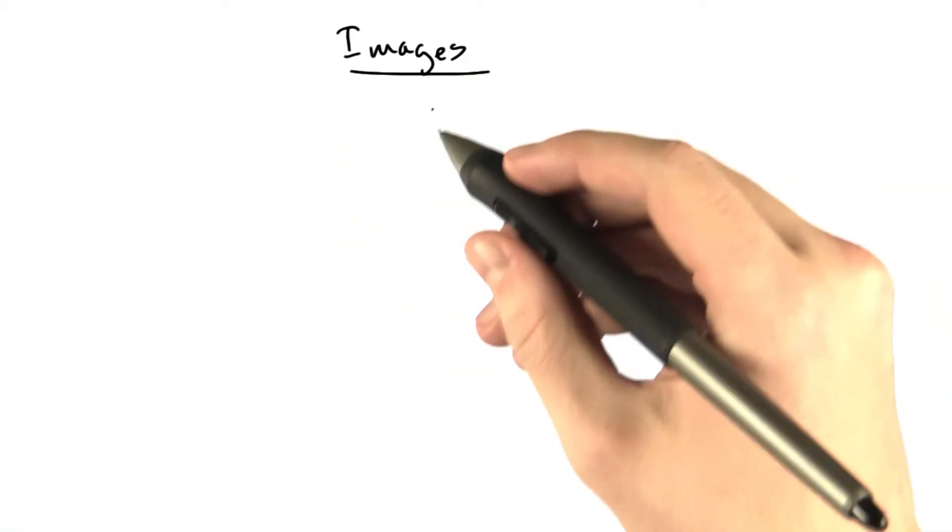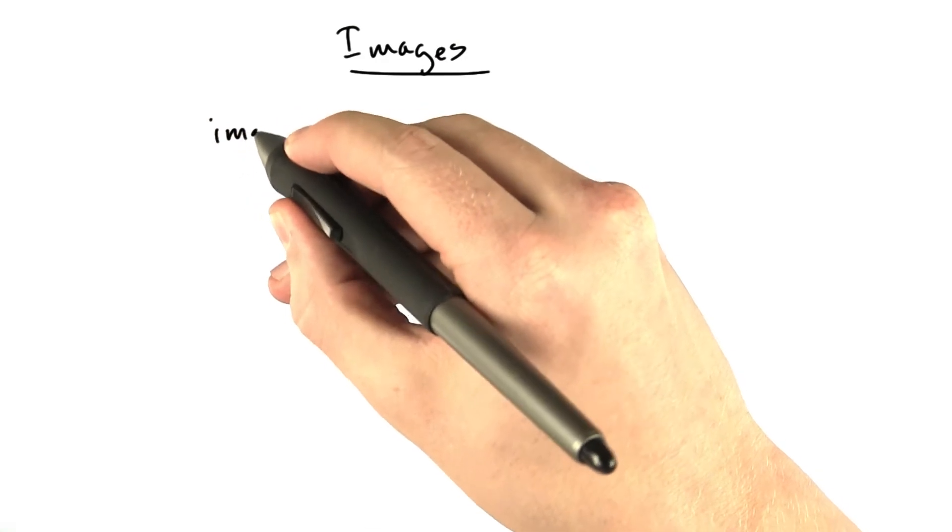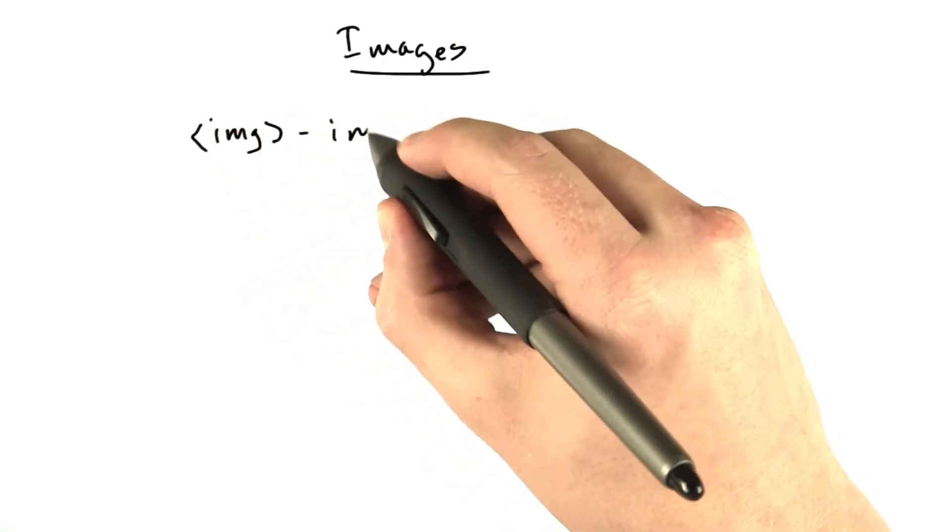All right, so let's learn another tag. This one is the image tag. It looks like this, img, and this is for including images.